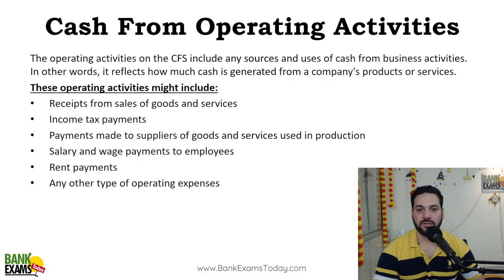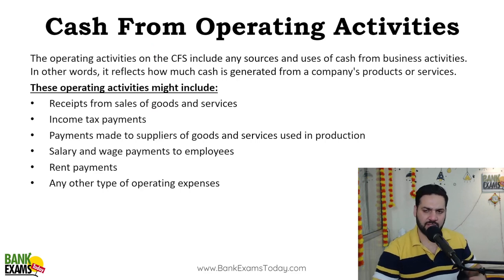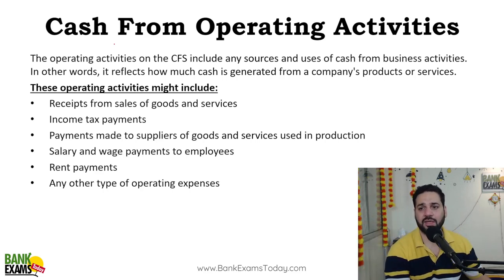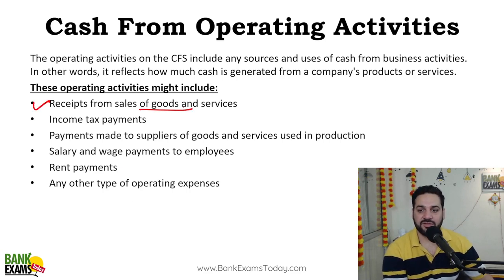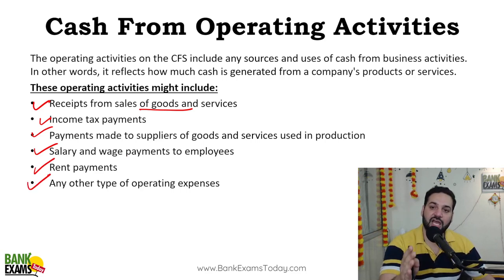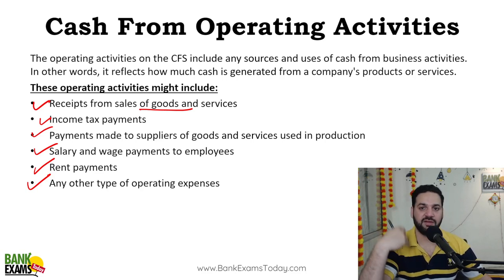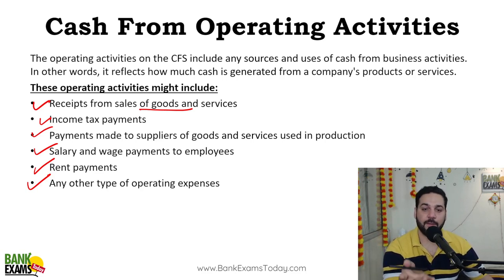Let's go through this one by one. Operating activities: all the expenses and receipts that are directly related to the production process — or if you are in the service sector, directly related to what you do — these are cash from operating activities. So receipts from sale of goods and services, income tax payment, payment to suppliers, payment received from debtors, salaries paid, wages paid, rent paid — any operating expense is cash from operating activities. That can be a cash inflow or a cash outflow.